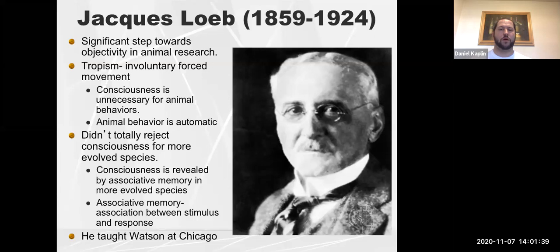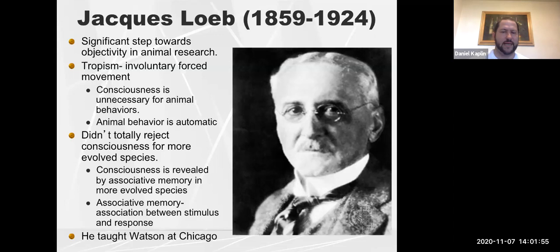Loeb argued that because of tropisms, you don't need consciousness for animal behavior — animals respond in a reflexive, hardwired way. However, he did not entirely reject consciousness. He felt there was associative memory, where memory is a cognitive process that works by linking stimuli in the environment with behavioral responses, which demonstrates some level of consciousness.